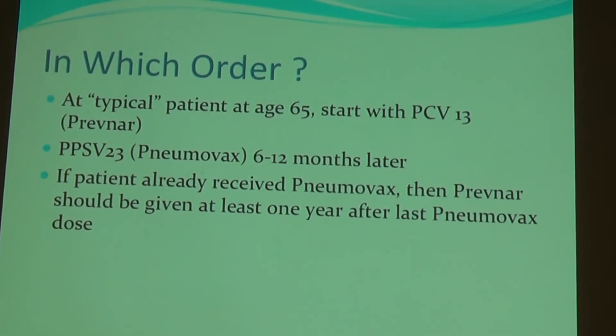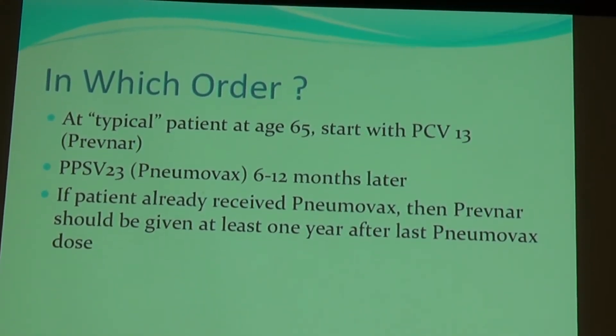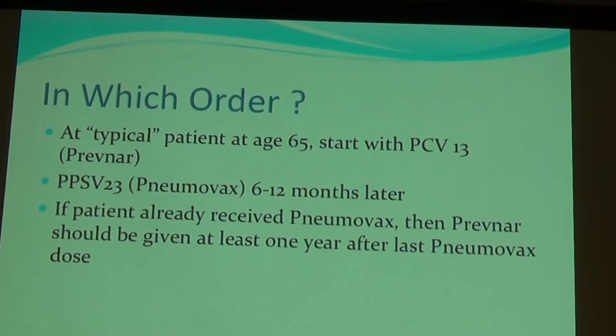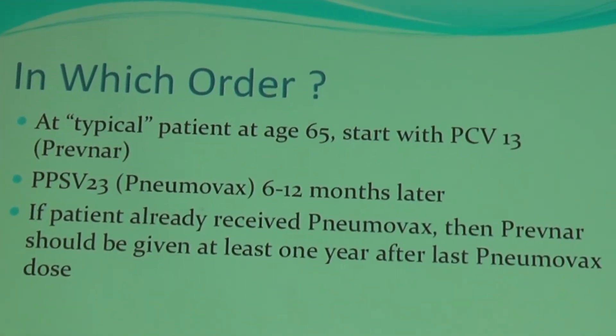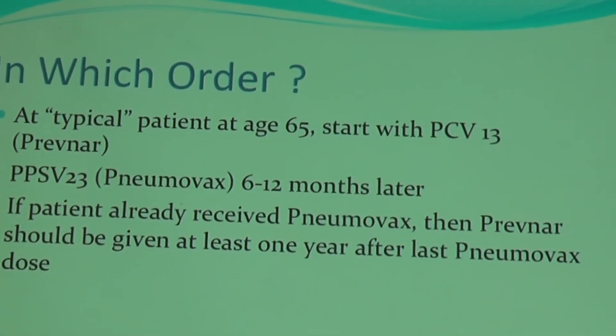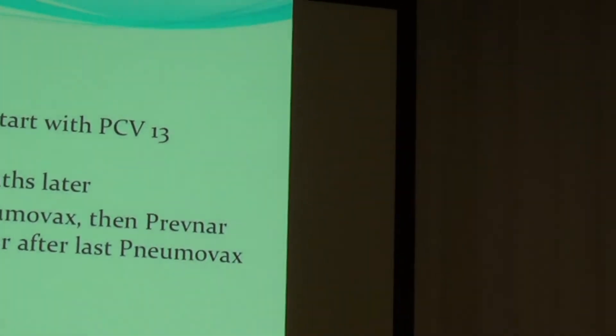So now we have two pneumococcal vaccines. Which order do we give them? Does it matter? For a typical otherwise healthy 65-year-old, we start with the PCV13 or Prevnar. The second vaccine, the Pneumovax or PPSV23, must be given at least 12 months later. Many patients in the community, especially over 65, have already received Pneumovax — if so, they should receive the Prevnar vaccine but at least one year since receiving that Pneumovax.